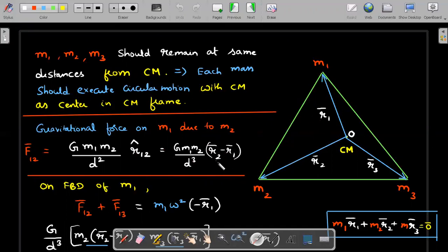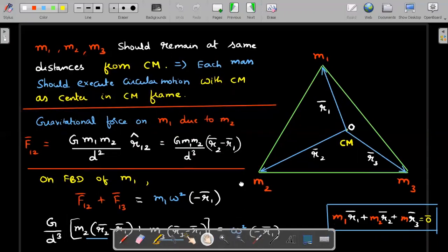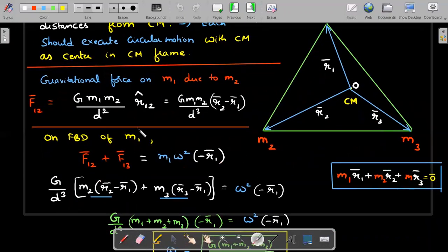This is a very nice interpretation of that vector force. Then on the free body diagram of M1, just follow this. There will be two forces, one directed towards M2 and another directed towards M3. Surely these two resultant should be directed towards O to make it centripetal in nature.